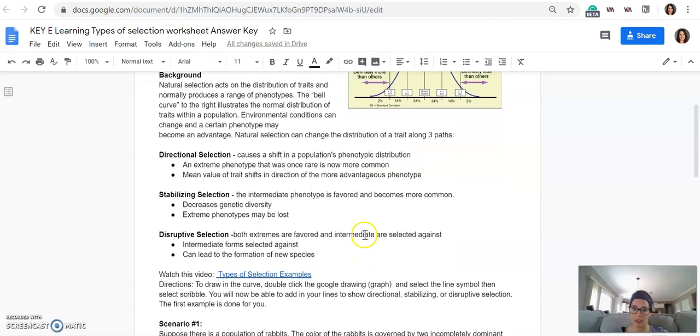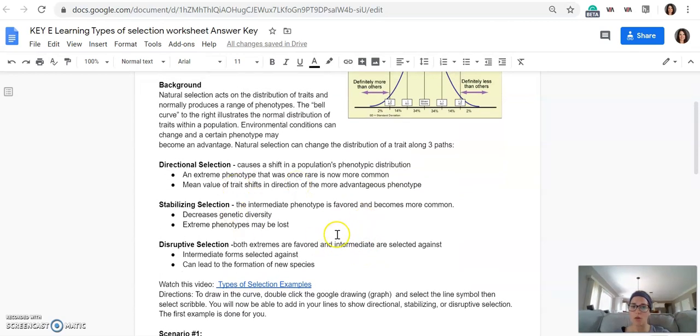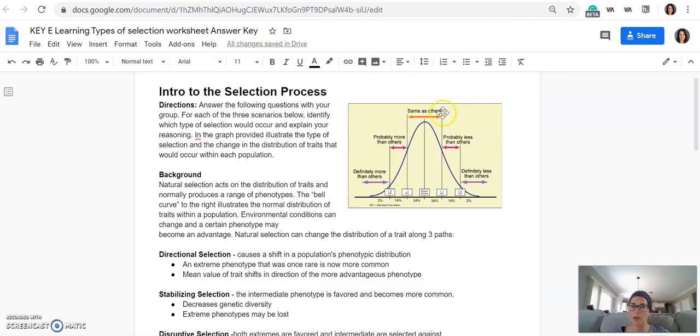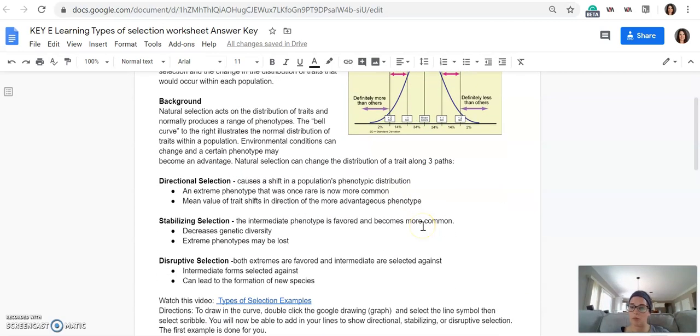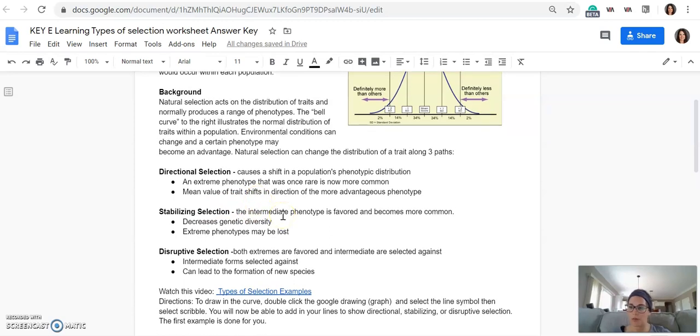Stabilizing selection, the intermediate or the middle phenotype is favored. So the phenotype variation that's right in the middle of the graph, that one becomes more common. Two other little notes here, decreases genetic diversity because the middle, the intermediate form is favored because that intermediate form makes the population more fit, and then also the extreme phenotypes may be lost. We'll look at an example of that one here in a second.